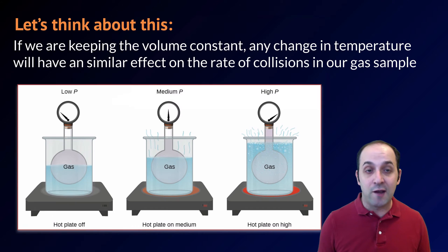Let's think about this for a second. If we're keeping the volume constant, any change in temperature is going to have a similar effect on the rate of collisions in our gas sample. If we have a confined volume of gas in a particular sample, it's going to have a particular pressure. As we increase the temperature of that sample, it's going to increase the kinetic energy of our gas, and it's going to cause the pressure of our sample to rise at constant volume.